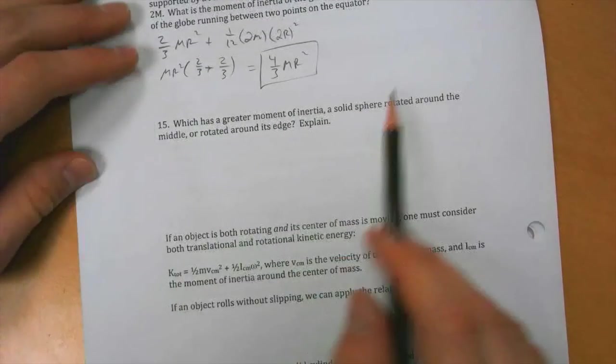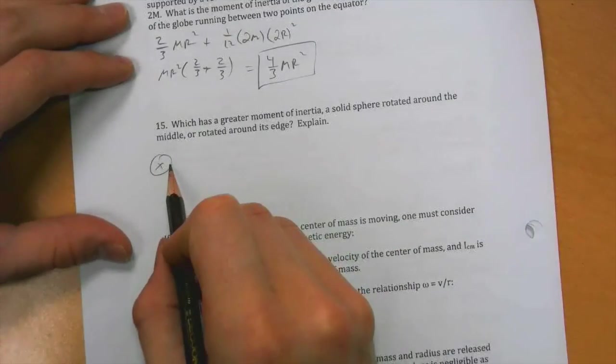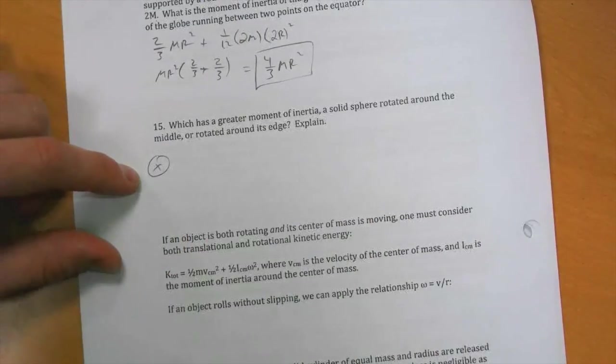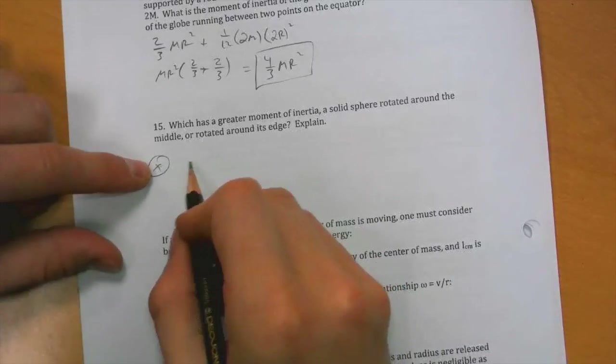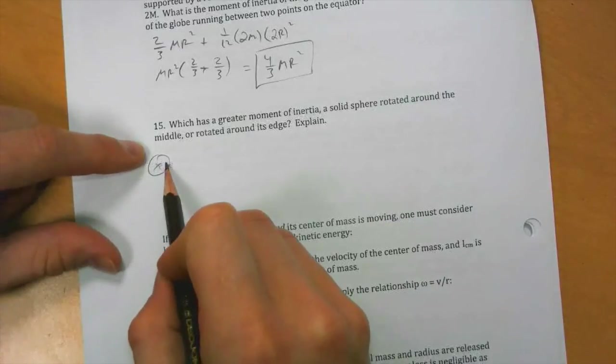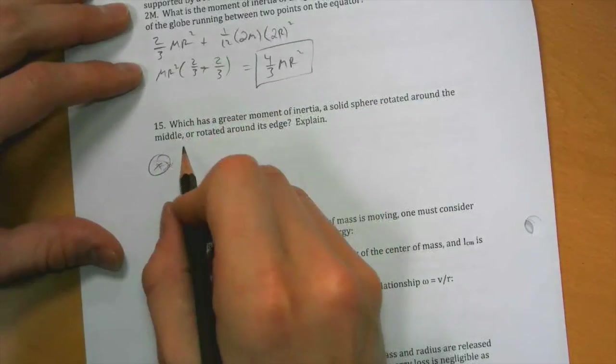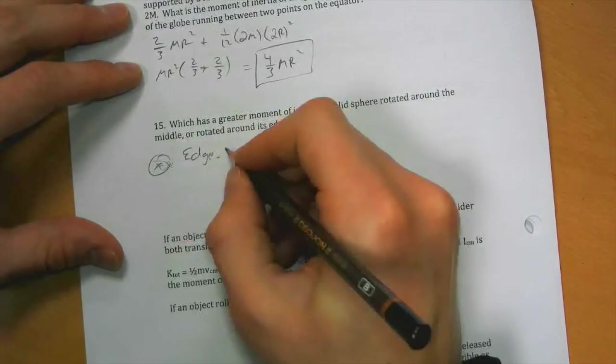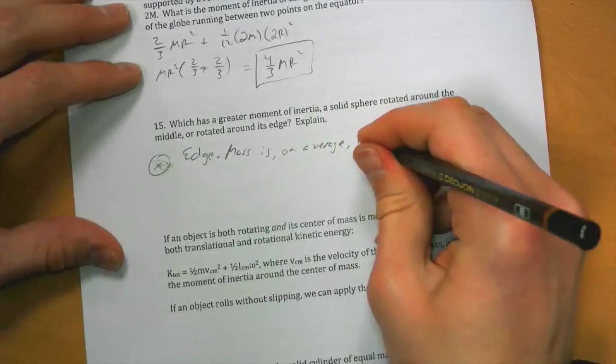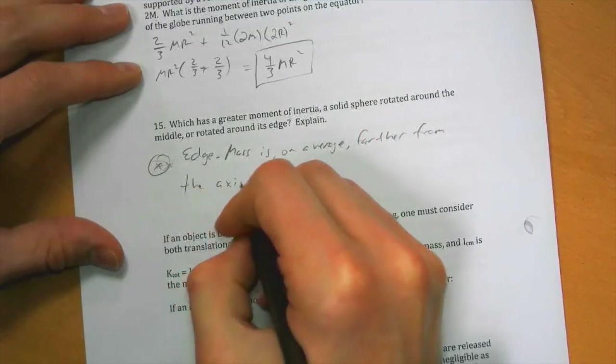Which has a greater moment of inertia, solid sphere rotated around the middle or rotated around the edge? Well, I already explained the parallel axis theorem, so you can get it from that. But even in terms of just regular reasoning, if you move this axis of rotation away from the center, then now the mass, on average, is going to be farther away from that axis of rotation. So it has a greater moment of inertia around the edge because the mass is, on average, farther from the axis of rotation.